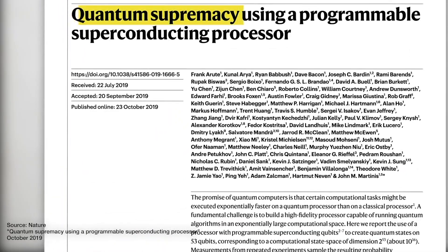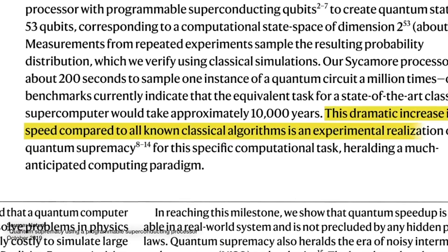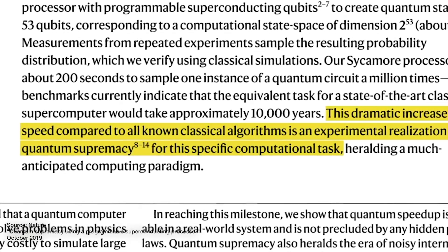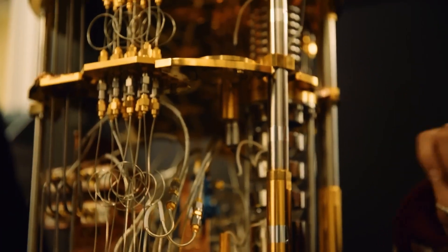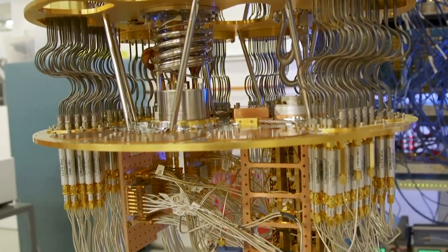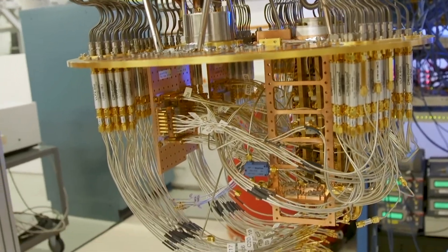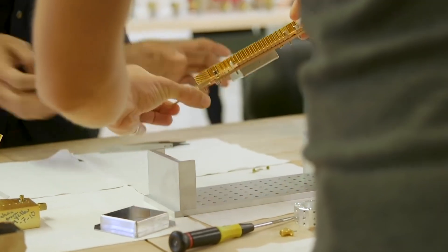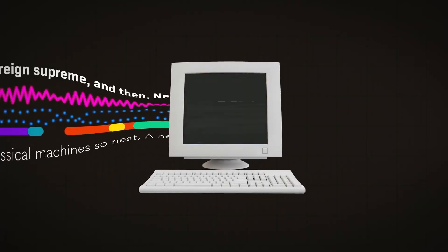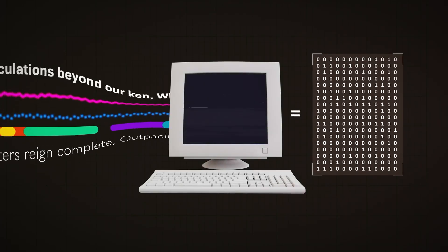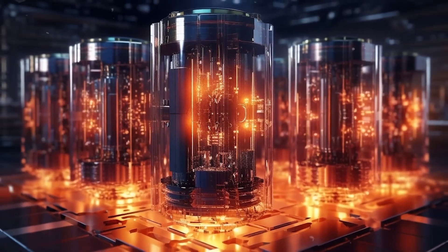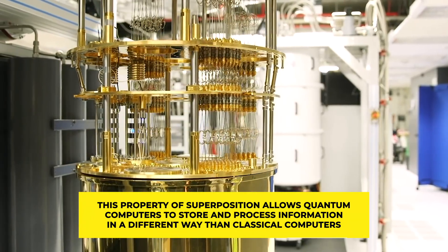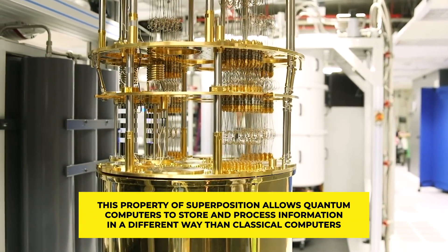Quantum computing is based on the principles of quantum mechanics, which is the branch of physics that describes the behavior of subatomic particles such as electrons, photons, and atoms. Unlike classical physics, which assumes these particles have definite and predictable states, quantum mechanics shows that particles can exist in a superposition of two or more states at the same time until they are measured and collapse into one state. For example, an electron can spin either up or down, but until observed, it can be in a superposition of both states.